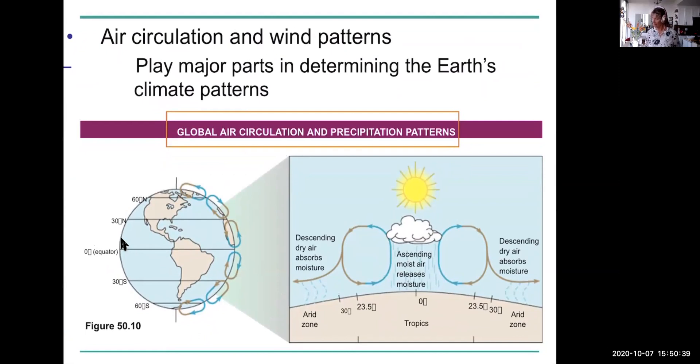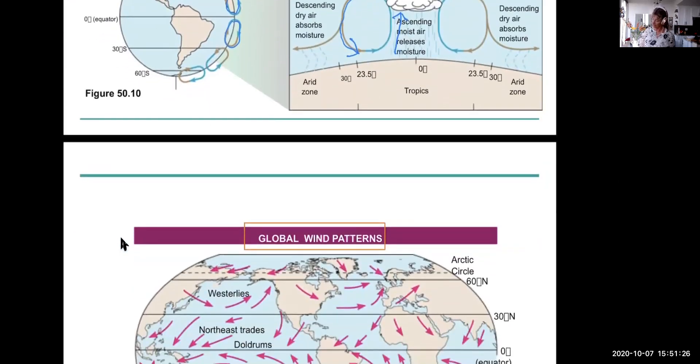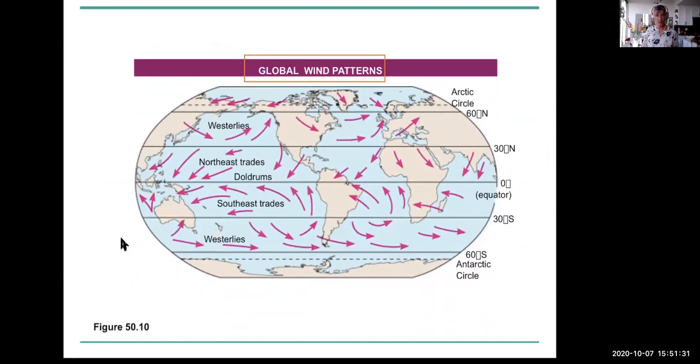So there are, what are they called again? Pockets. There's another word for them. Cells. Thank you. Yeah. Cells of wind patterns whereby ascending air, moist air goes upward, descending air absorbs the moisture, it gets drier. And wind patterns are predictable for the most part around the world. So here, for example, we often get westerlies. Westerlies, which means that the wind comes from the west.